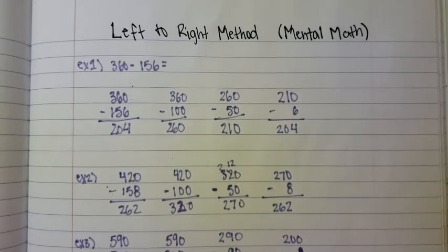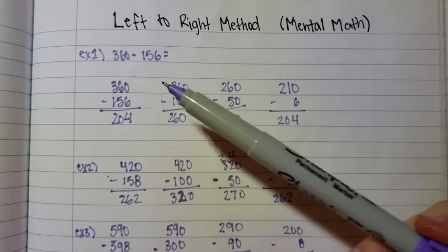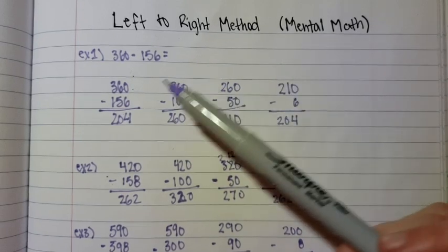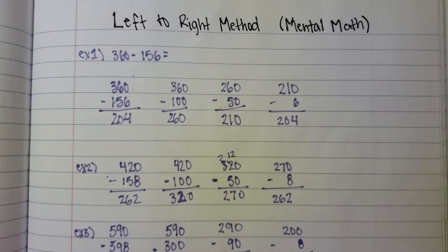So, that is the left to right method. It's helpful for mental math because you're able to subtract and split it up instead of trying to do the carrying and borrowing over in your head. That is the left to right method for subtraction.